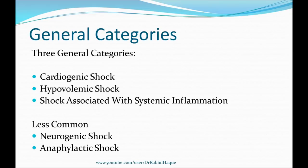Besides these three major categories, there are some other less common types of shock. Neurogenic shock can happen due to spinal cord injury or as a result of an anesthetic accident. Anaphylactic shock can occur as a result of immunoglobulin E-mediated hypersensitivity.